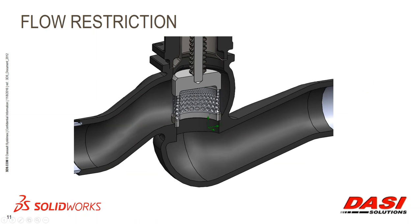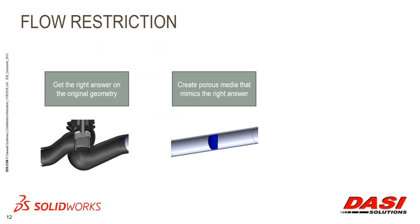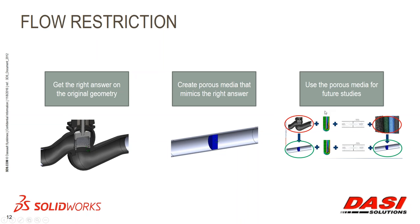Just by looking at it, you can kind of see how this valve might be intended to operate. When closed, I'll just be screwing it downward, and when it's fully open the fluid will go through all these holes. To run the simulations, first I'll run simulations on the original geometry to figure out what the right answer is - what's the flow rate through the valve, what's the pressure drop. Then I'll create a porous media that mimics that right answer. I'll take this geometry and simplify it down to just a cylindrical body that the flow will be allowed to go through, and then use that porous media for future studies.